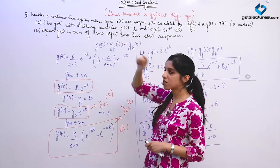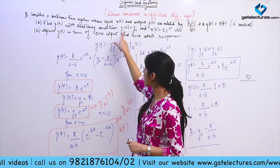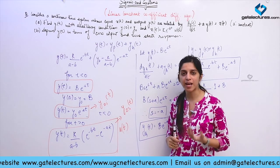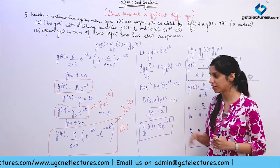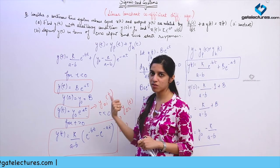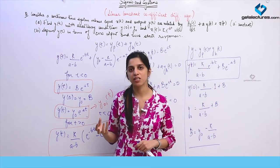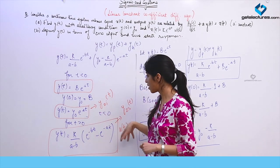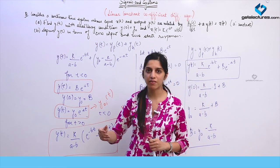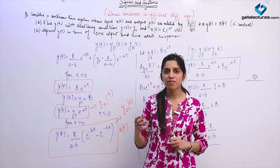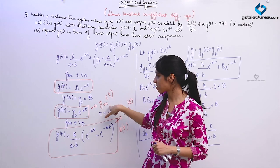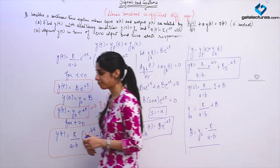Similarly, for the system to be time invariant, y_naught must also be 0. Only then will the system be causal, time-invariant, and linear. So the system should have no auxiliary conditions. Otherwise, if the system has auxiliary conditions making it non-linear, we can express its output as the sum of zero-input and zero-state response. The zero-input response occurs in non-linear devices like capacitors and inductors, which have stored charge or voltage.